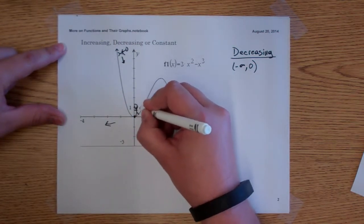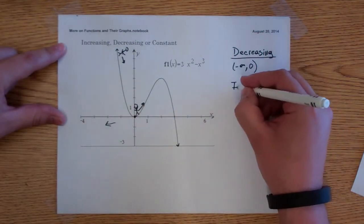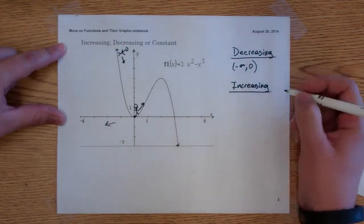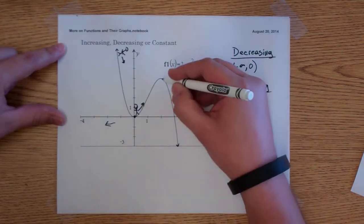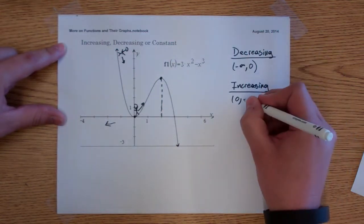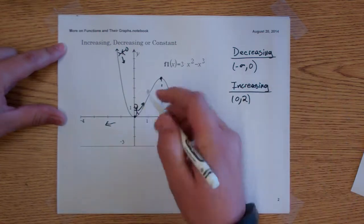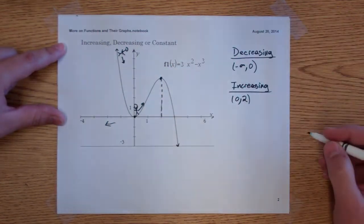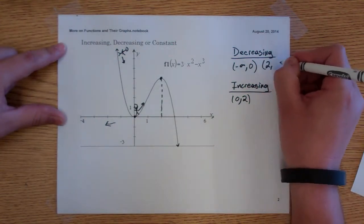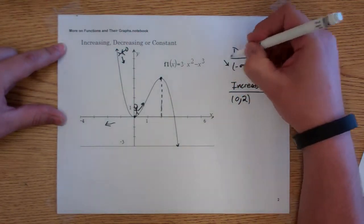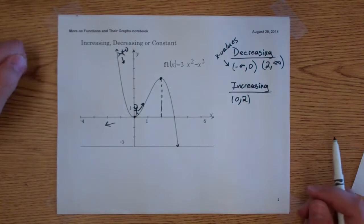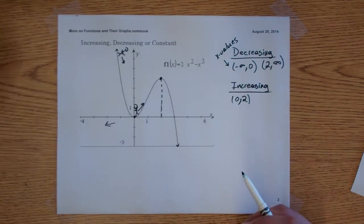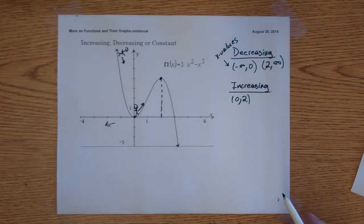If you start walking back up from x equals 0, your altitude would be increasing, so your graph is also increasing. It starts at 0 and goes to positive 2, where it stops increasing and goes back to decreasing. So we're decreasing again from 2 to positive infinity. These intervals are based on x values, not y values. To summarize: if your elevation is decreasing, the graph is decreasing; if increasing, the graph is increasing; if not changing, it is constant.